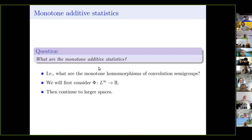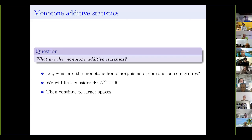One example of such a phi is the expectation — it's additive for independent random variables (in fact for any random variables), and it's monotone with respect to stochastic dominance: if I move mass to the right, I just increase the expectation.